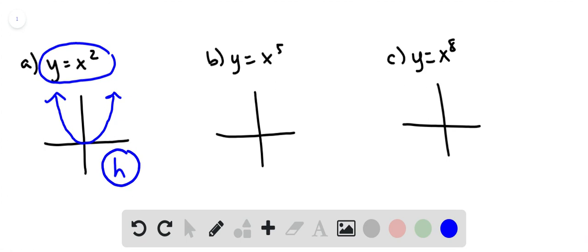When we look at y equals x to the fifth power, we realize that's an odd function, so it should demonstrate symmetry about the origin, and that's the one that's going to look like this, and so that goes with graph f.